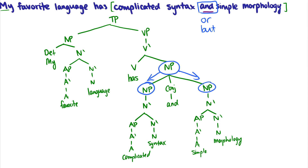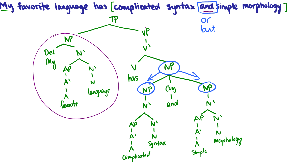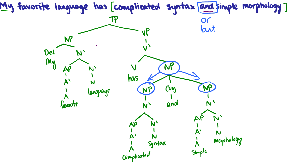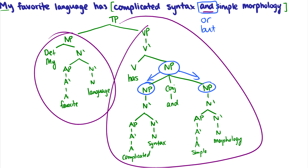So those were three example sentences with X-bar theory. Hopefully by now you have a general idea of where adjuncts and modifiers go, where complements go, and you won't be scared if you see a conjunction in the future. You have an idea about where subjects go, where objects go, and where verb phrases go. The subject will always be on the left side of the TP in English, and the verb phrase will contain everything else in the predicate. If you have any questions, please leave them in the comments below.